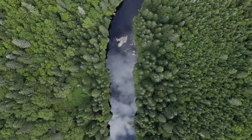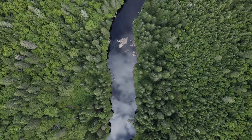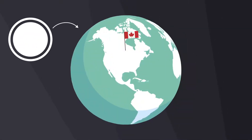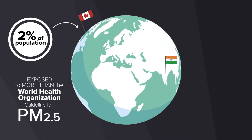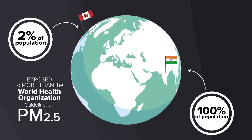PM pollution in Canada and other developed countries is less severe than in other parts of the world. On average, Canadian levels are lower than the guidelines set by the World Health Organization, and only 2% of Canadians are exposed to PM levels that exceed that guideline. Compare that to India, the country with the highest average PM levels, where 100% of the population is exposed to concentrations greater than that WHO guideline.